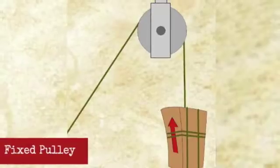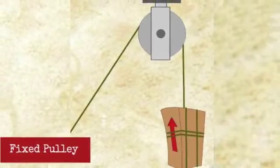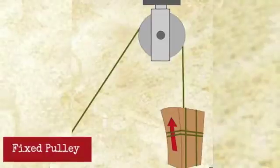A fixed pulley is a pulley that just stays in one place but helps the other pulley move.